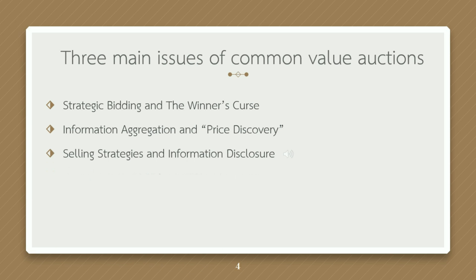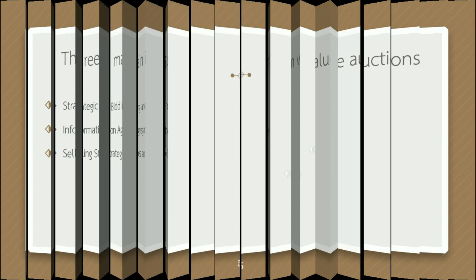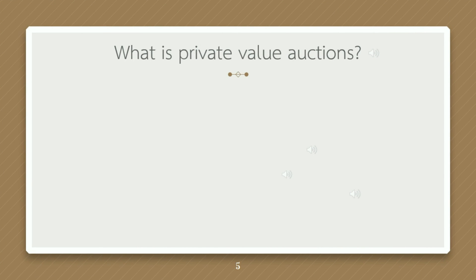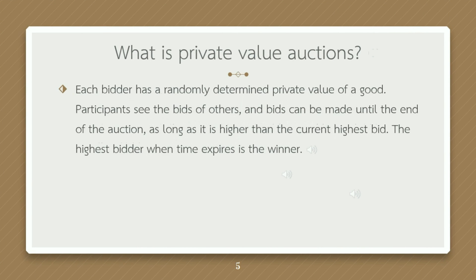There are three main issues of common value auctions: strategic bidding and the winner's curse, information aggregation and price discovery, and selling strategies and information disclosure.